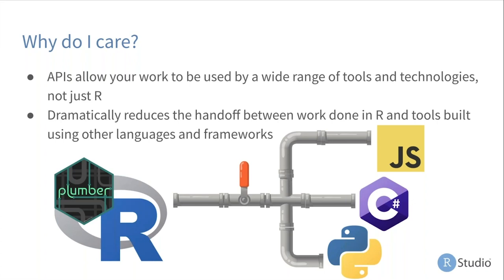I've got this model here, and another team in my organization might be using Python, C#, JavaScript, C++, or any number of tools — and they want to use my model. APIs allow me to do that in a very straightforward and easy way, so I no longer need to hand off my model to be rebuilt by another team in another language. Instead, they can just communicate directly with the work I've done via this web API, which dramatically reduces the handoff between R work and other tools and technology frameworks.